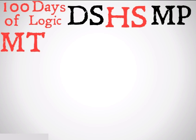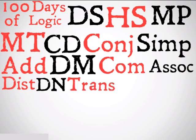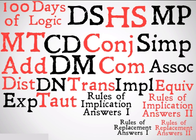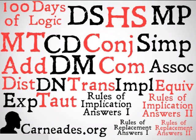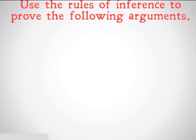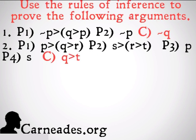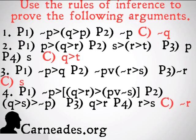Modus tollens is going to be represented by MT. There are a lot of other rules of implication and rules of replacement we're going to get into here, but first we're going to take a look at a few problems where we can use only those four rules of inference we've learned so far in order to take the premises presented and prove the conclusion. Try these on your own, or check them out in my next video. Watch a new video every single day for 100 days here at carnades.org, and stay skeptical everybody.